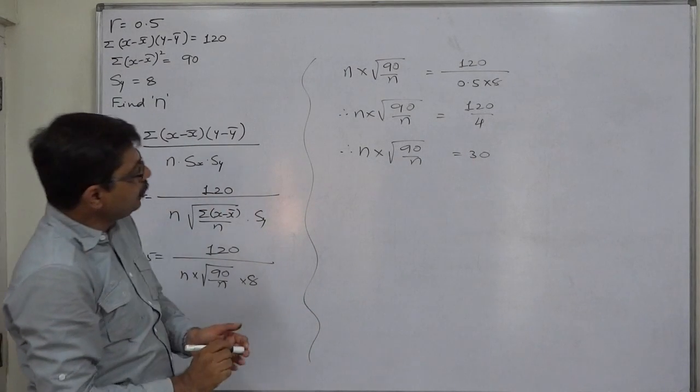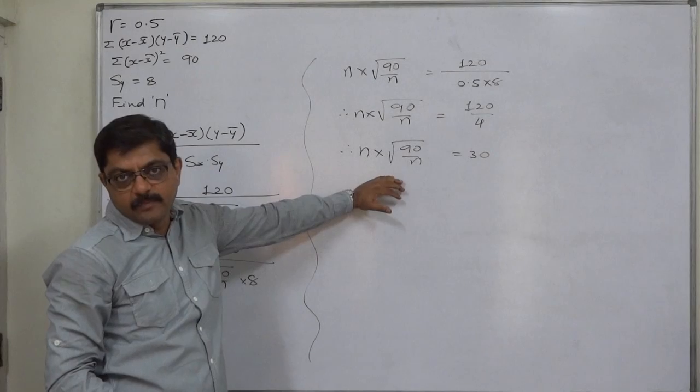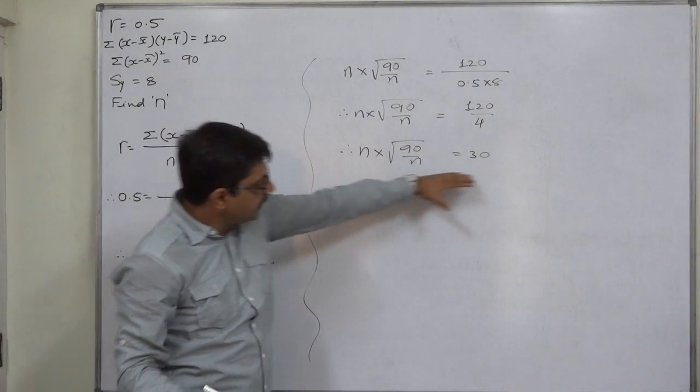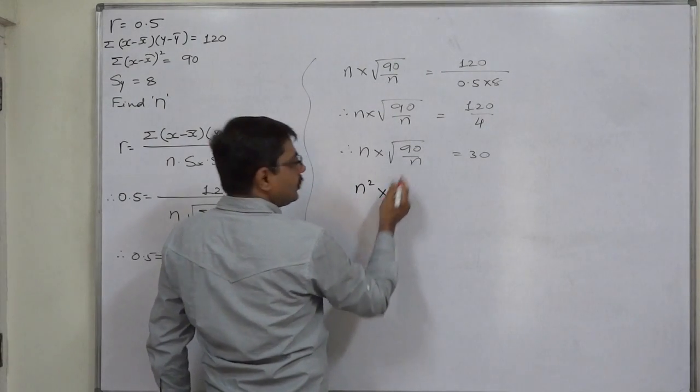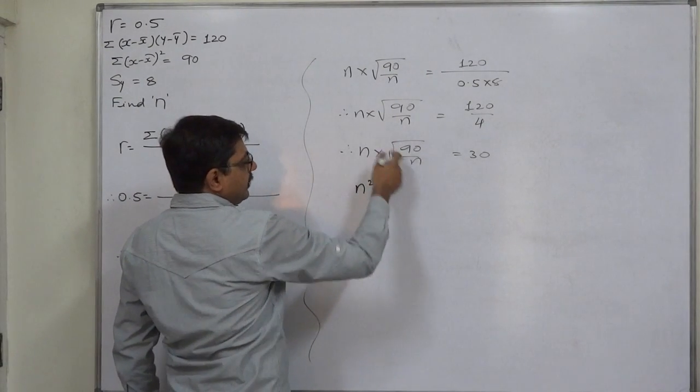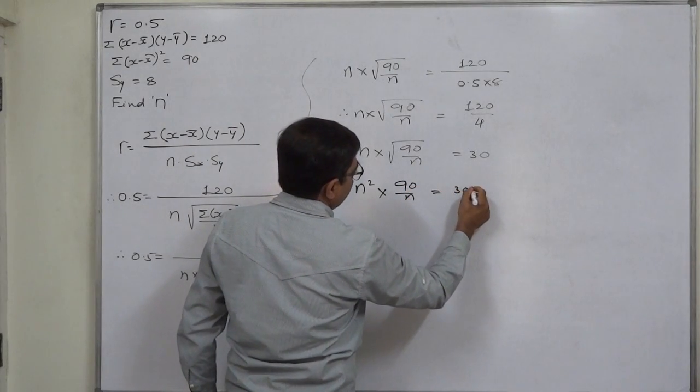To have the value of n, first we have to remove the sign of square root. For that purpose, we take the square on both sides. So n² times (90/n) equals 30², which simplifies to 90n equals 900.